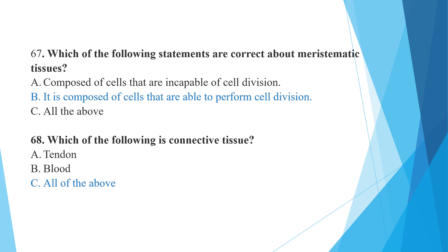Which of the following statements is correct about meristematic tissue? Meristematic tissues are tissues which have the ability to perform cell division. Statement B is correct: it is composed of cells that are able to perform cell division.